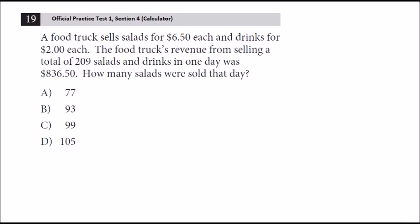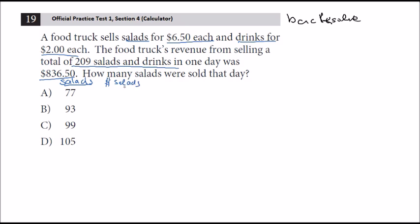Next question is number 19 from the same test — another back-solve question. One way to identify back-solve questions: if there's an unknown in the question and all the answers are numbers, that tips you off. A food truck sells salads for $6.50 each and drinks for $2.00 each. The food truck's revenue from selling a total of 209 salads and drinks was $836.50. The question asks how many salads were sold that day.